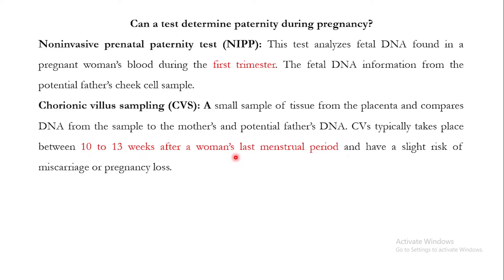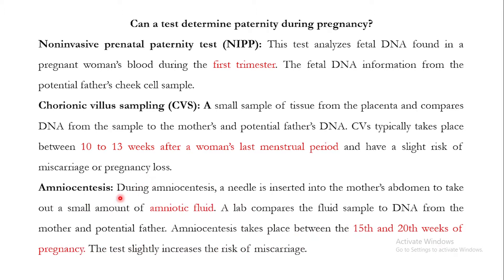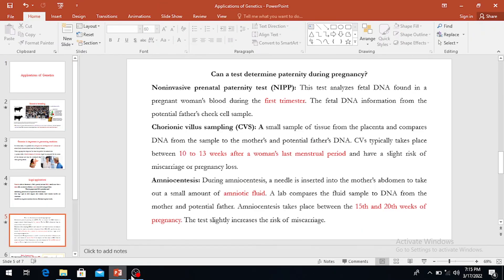However, CVS carries a slight risk of miscarriage or pregnancy loss. Another available technique is amniocentesis, during which a needle is inserted into the mother's abdomen to extract a small amount of amniotic fluid. The amniotic fluid contains fetal cells, from which DNA is extracted and then compared in a lab with the DNA of the mother and the potential father. Amniocentesis takes place between the 5th and 20th week of pregnancy, but this test also increases the risk of miscarriage. The discussion will continue in the next video.